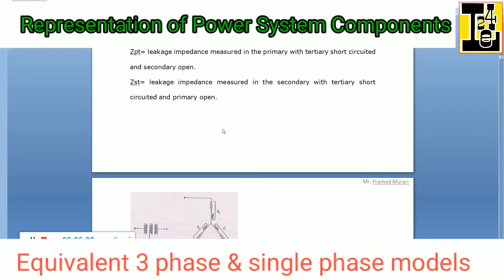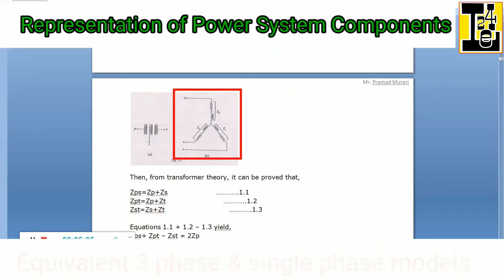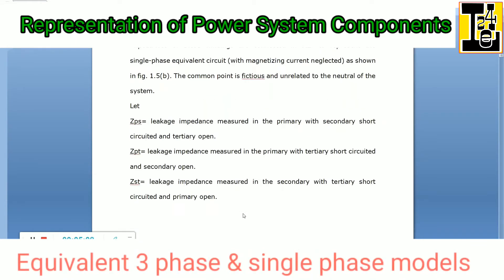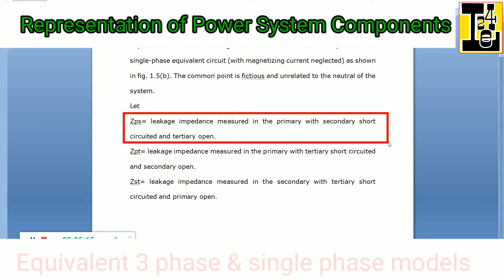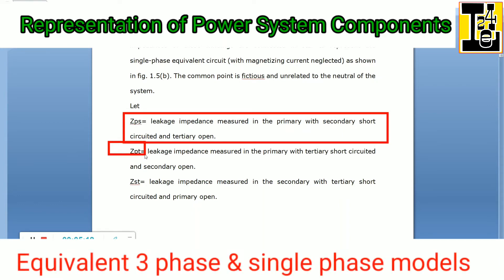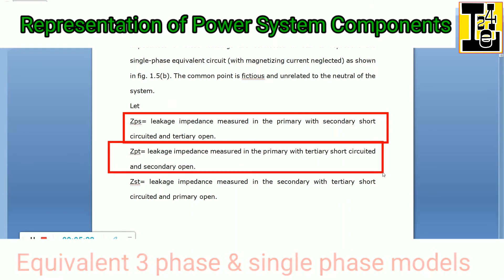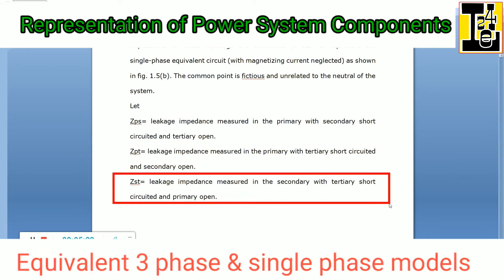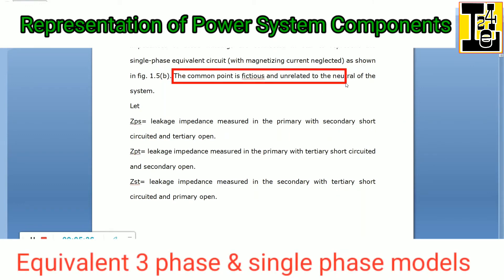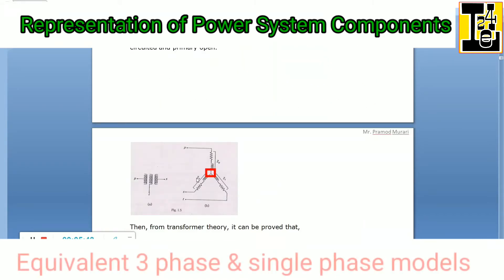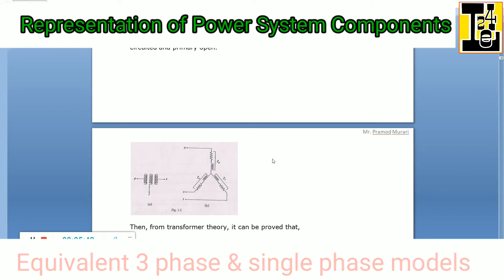The impedances of these windings are connected in star to represent the single phase equivalent circuit. With magnetizing current neglected, the diagram will be shown like this. Here the common point is fictitious and unrelated to the neutral of the system. This fictitious common point connects the primary, secondary, and tertiary windings.